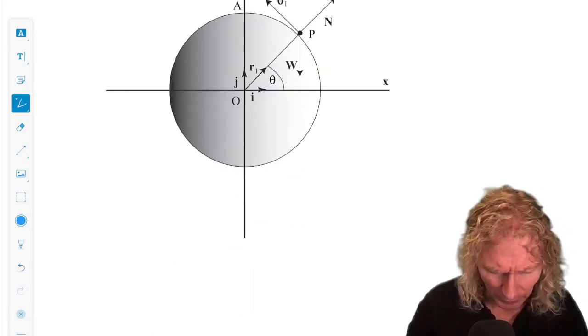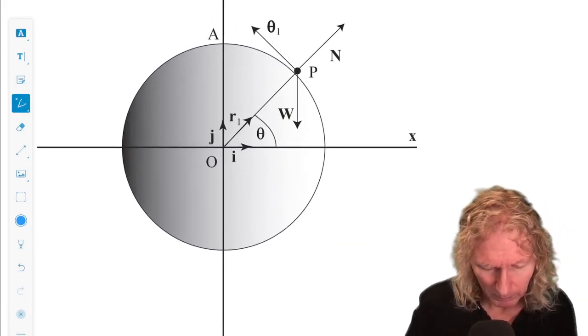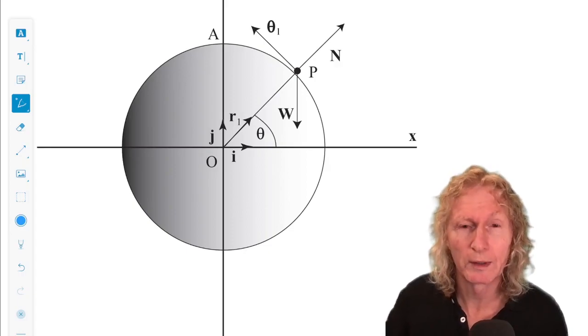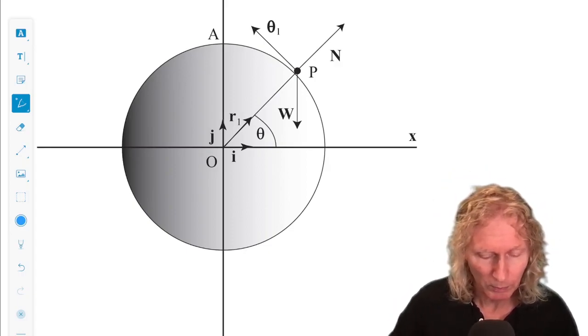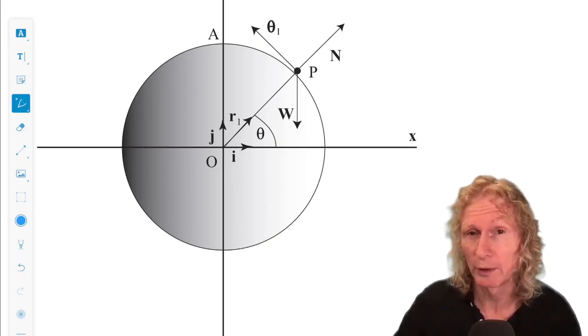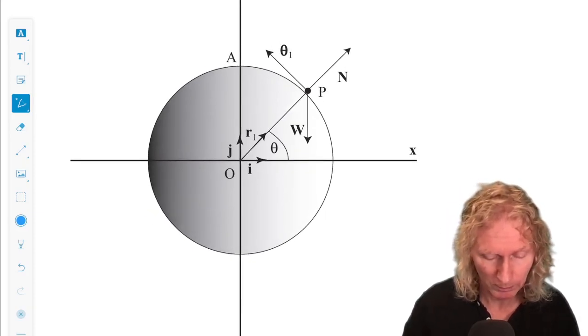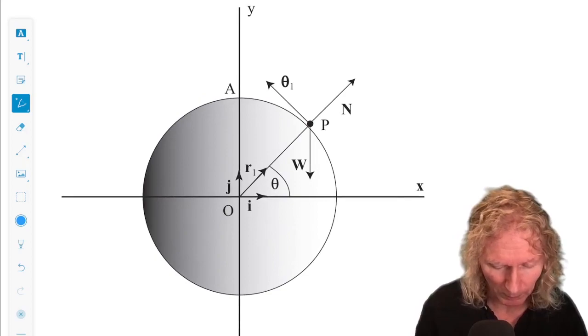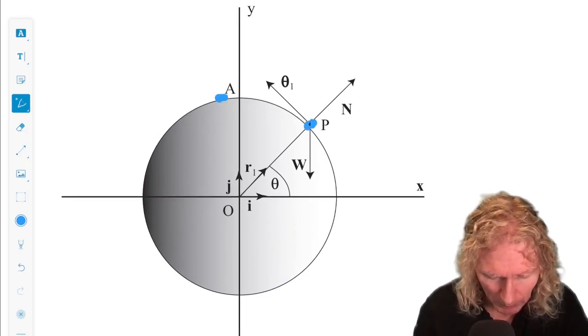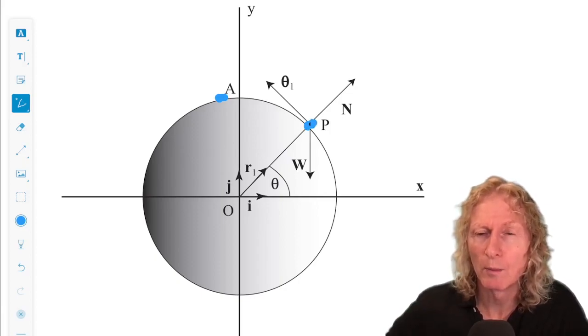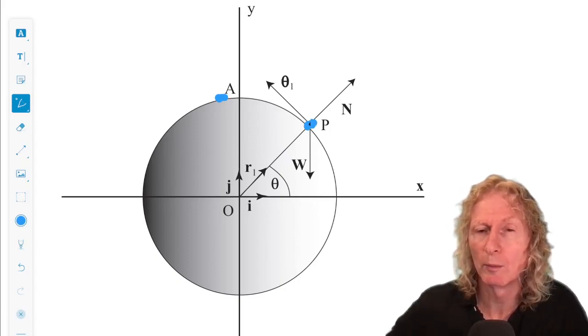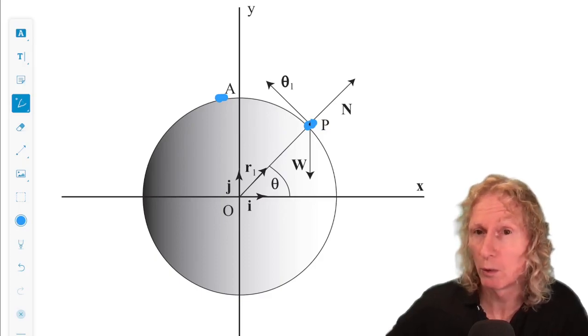So this is the picture we have. The only force is downwards, so we can consider a cross-section of the sphere, or it looks like a circle. The top of the sphere is A. P is a particle, and it's going to be easiest to use a moving set of coordinate systems moved with the particle, polar coordinates.